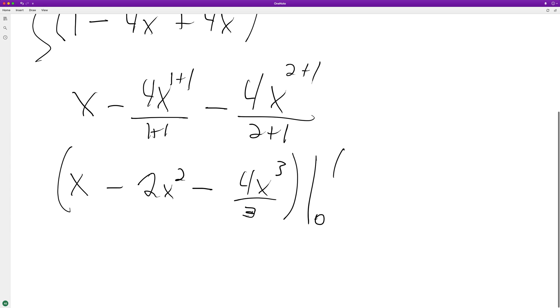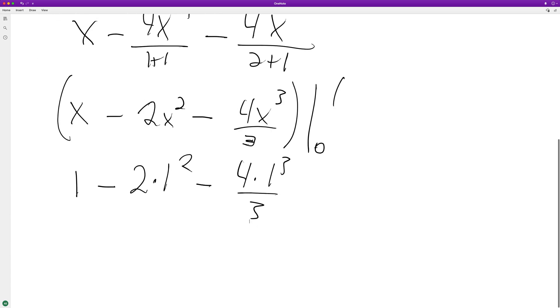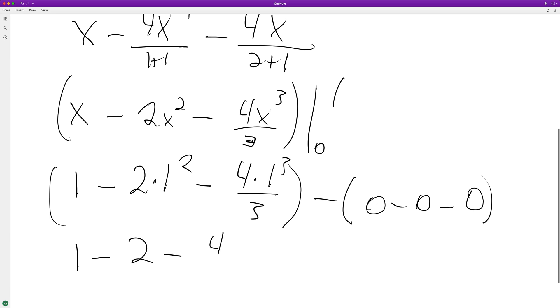So starting off with 1, we get 1 minus 2 times 1 squared minus 4 times 1 cubed over 3. And then when we subtract 0, it turns everything into 0. So it's pretty much taken care of. So this is 1 minus 2 minus 4 thirds.